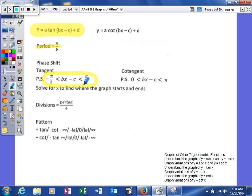So we still need to solve for x. Your divisions are going to be the same. And then the pattern's a little bit different. So here's our pattern for positive tangent, and here's our pattern for negative tangent. So keep that in mind, and we'll look and see if we can't figure this stuff out.